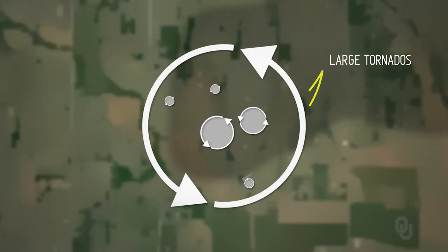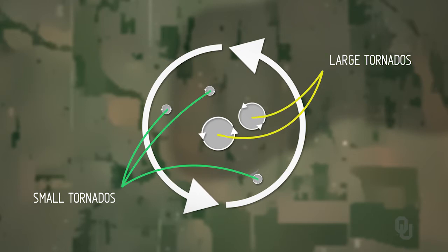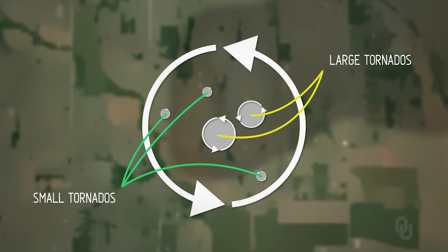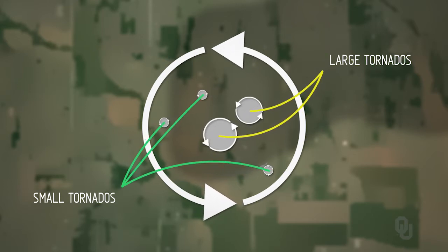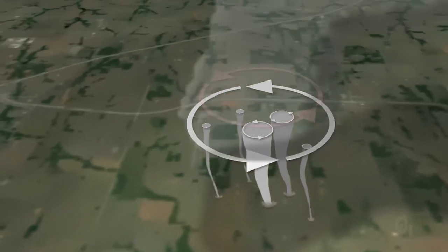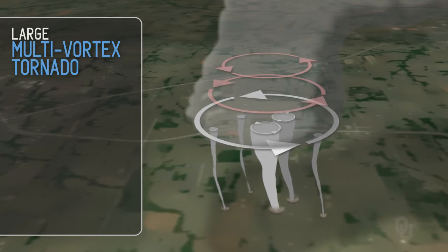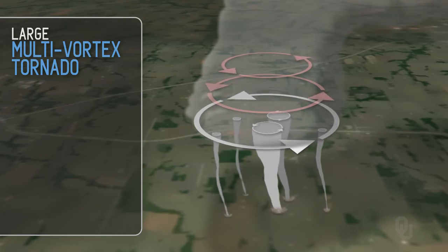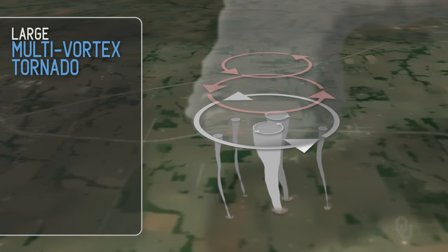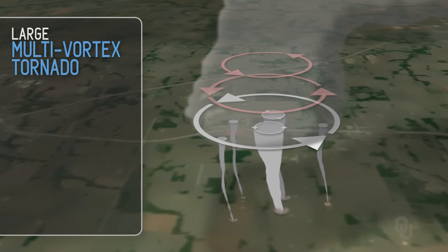Here we have a huge mesocyclone. The entire thunderstorm is rotating. This is a simulation of what the tornado in Canadian County on May 31st, 2013 would have looked like. This is not exact — this is our rendition of it — but you see this huge circulation.